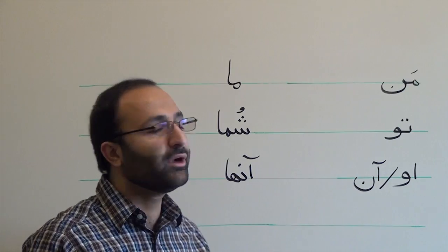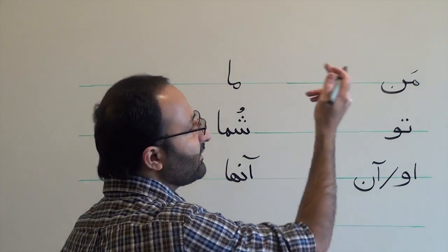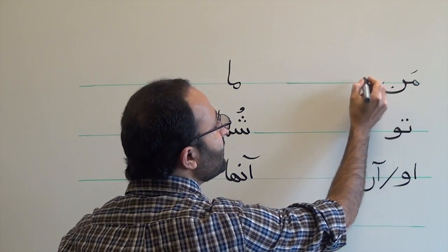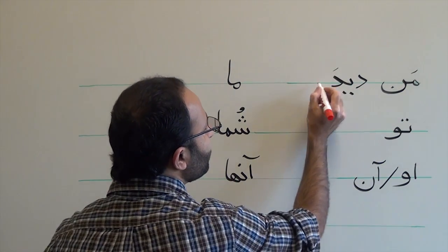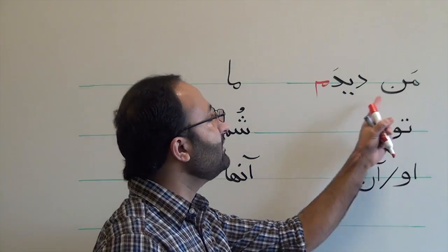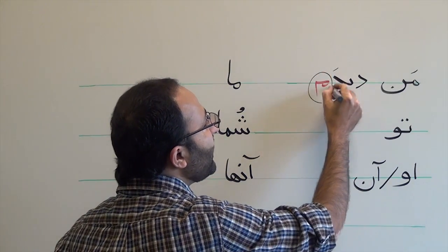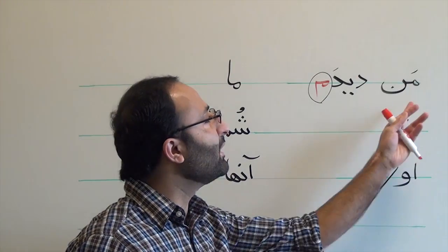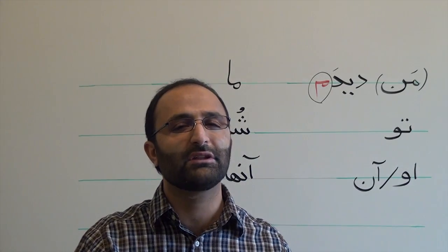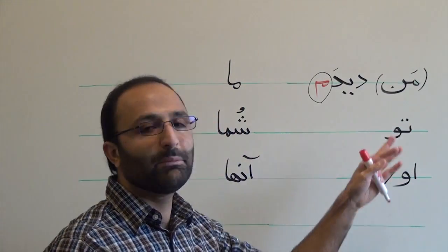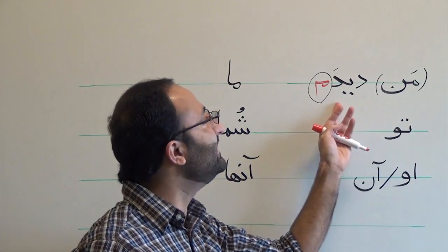There are some important points to know about personal pronouns in Farsi. First, when we have a sentence like 'man didam,' meaning I saw — as you know, we conjugate the verb in Farsi. So in fact, the subject is always carried in the verb. So 'man' is kind of optional. Even though in Farsi it's common to use both — 'man didam' — if you just say 'didam,' it's fine. It means I saw. 'Man didam' means I saw; 'didam' also means I saw.